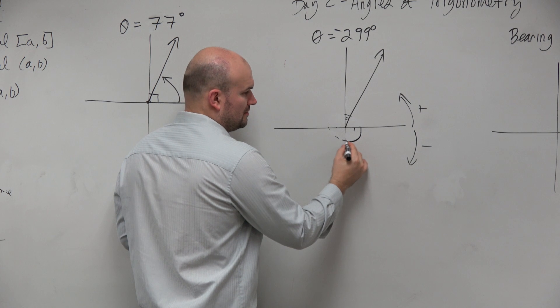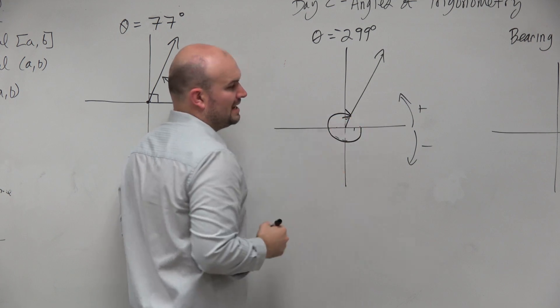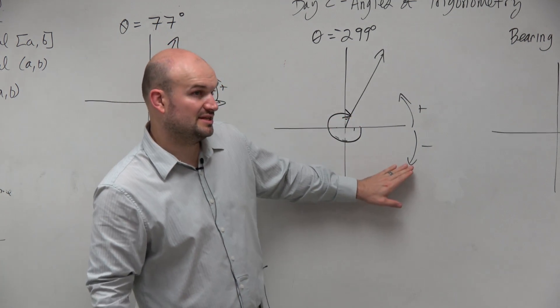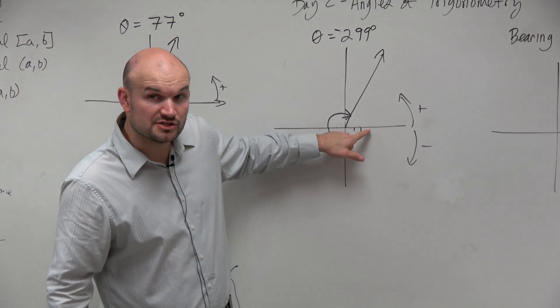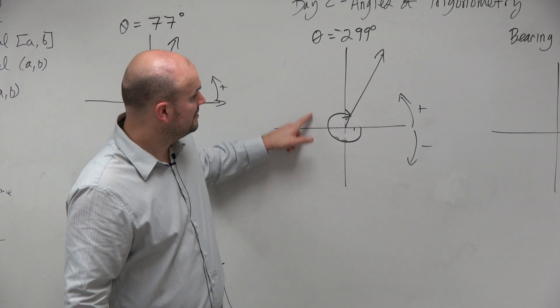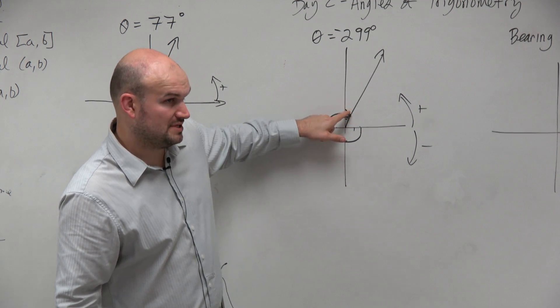But the angle starts here and then ends there. So just make sure you guys understand the difference between the negative and the positive. The direction matters. We're always starting at our initial side, which is the positive x-axis, and then we're ending at our terminal side. OK?